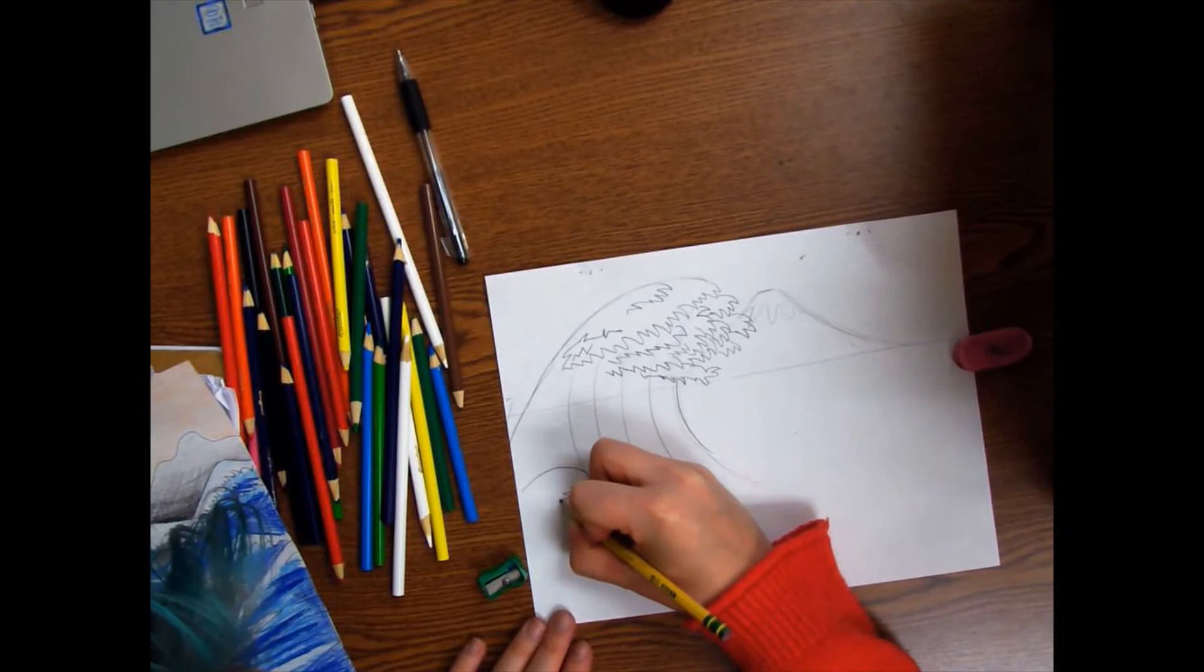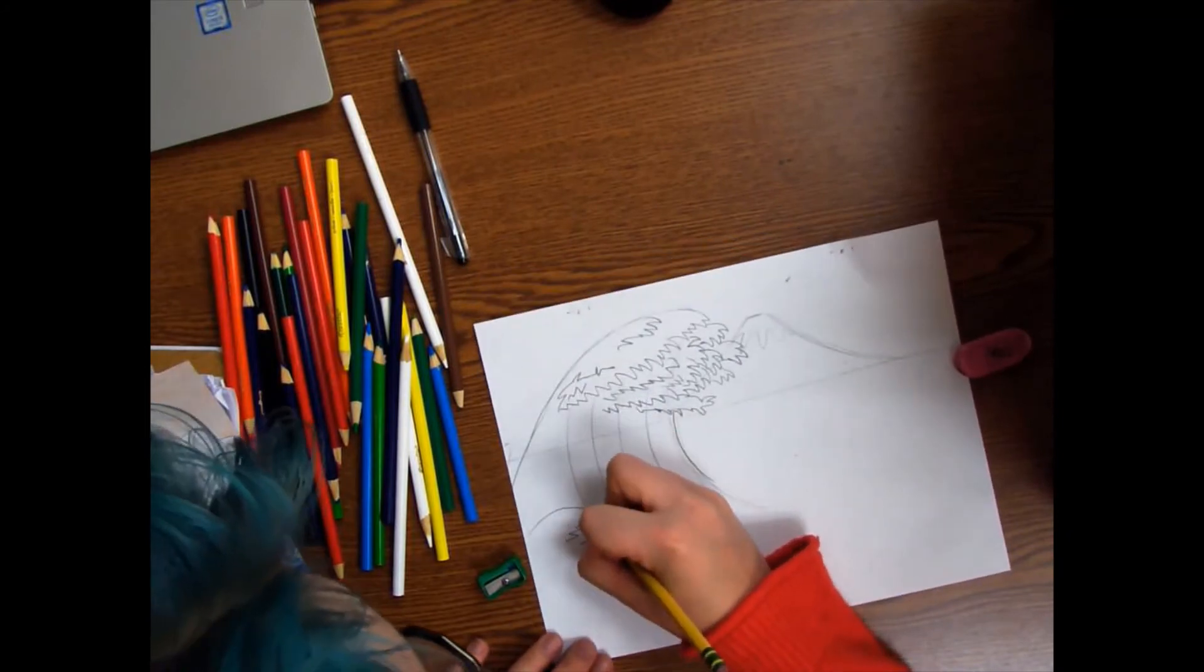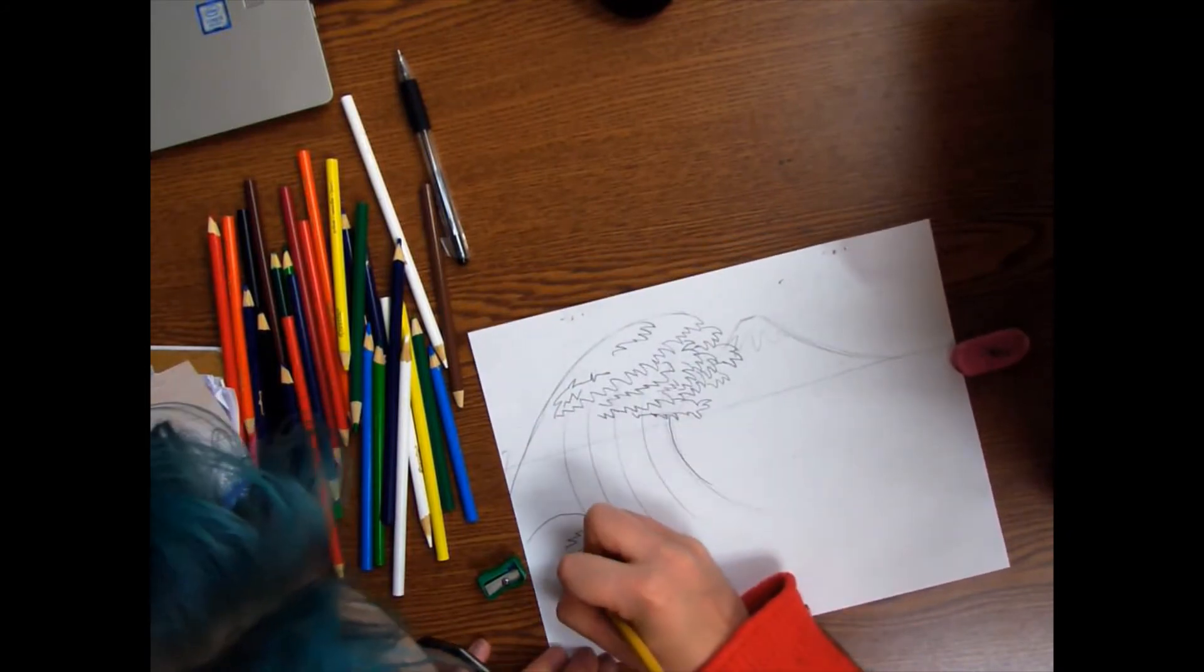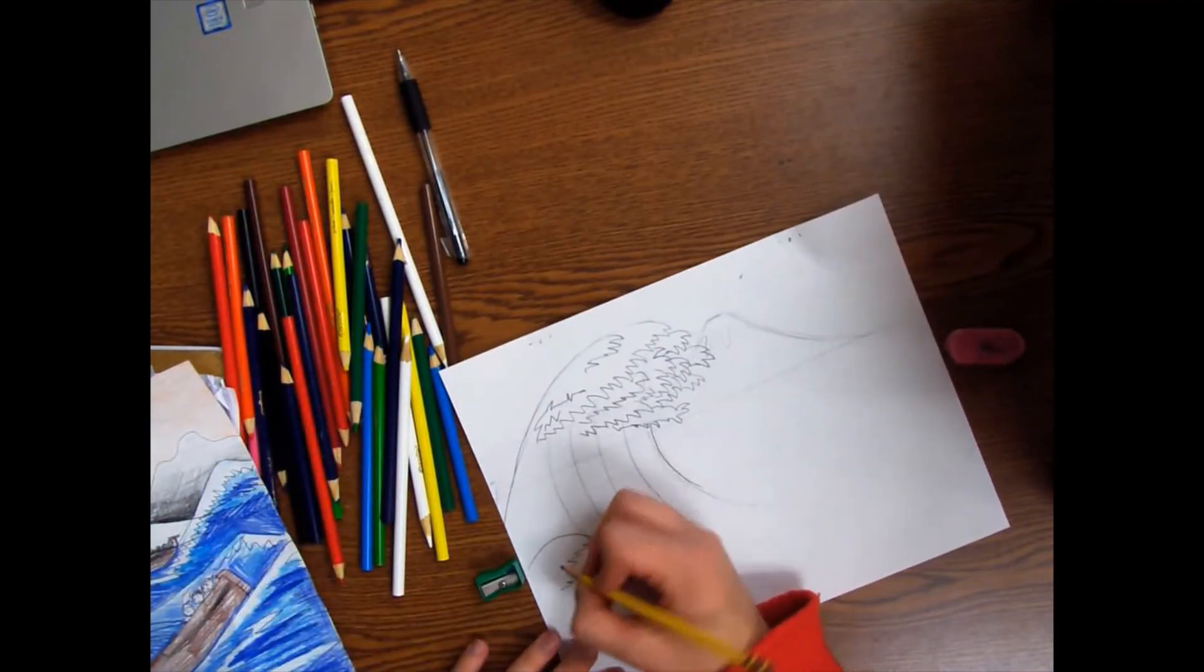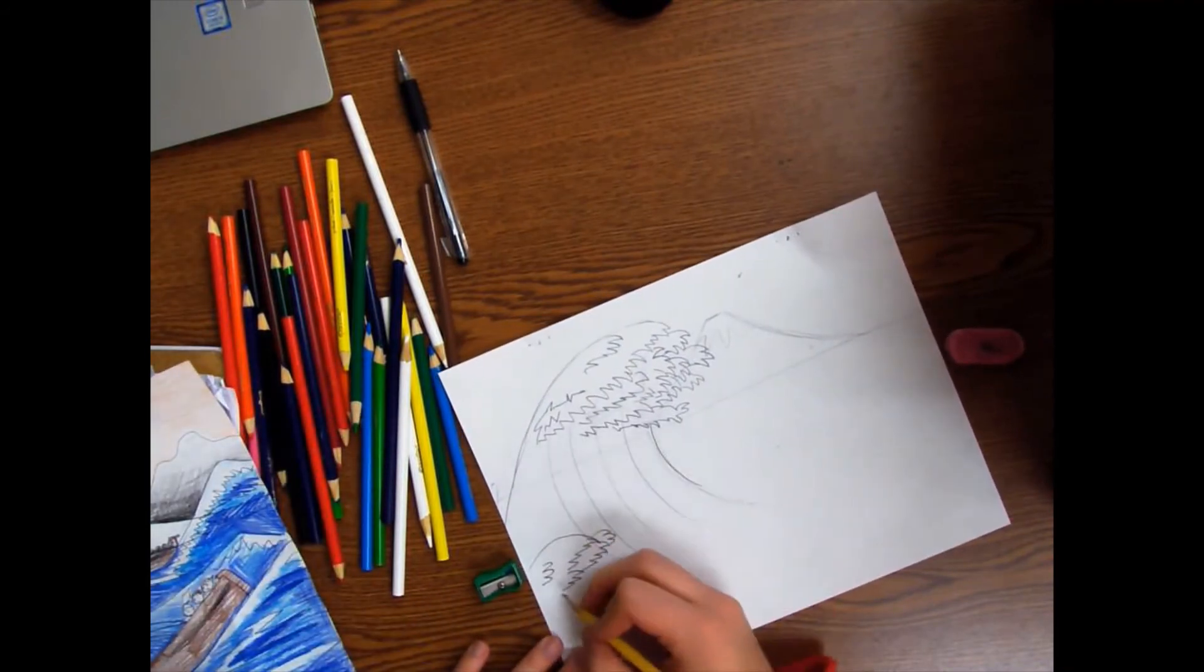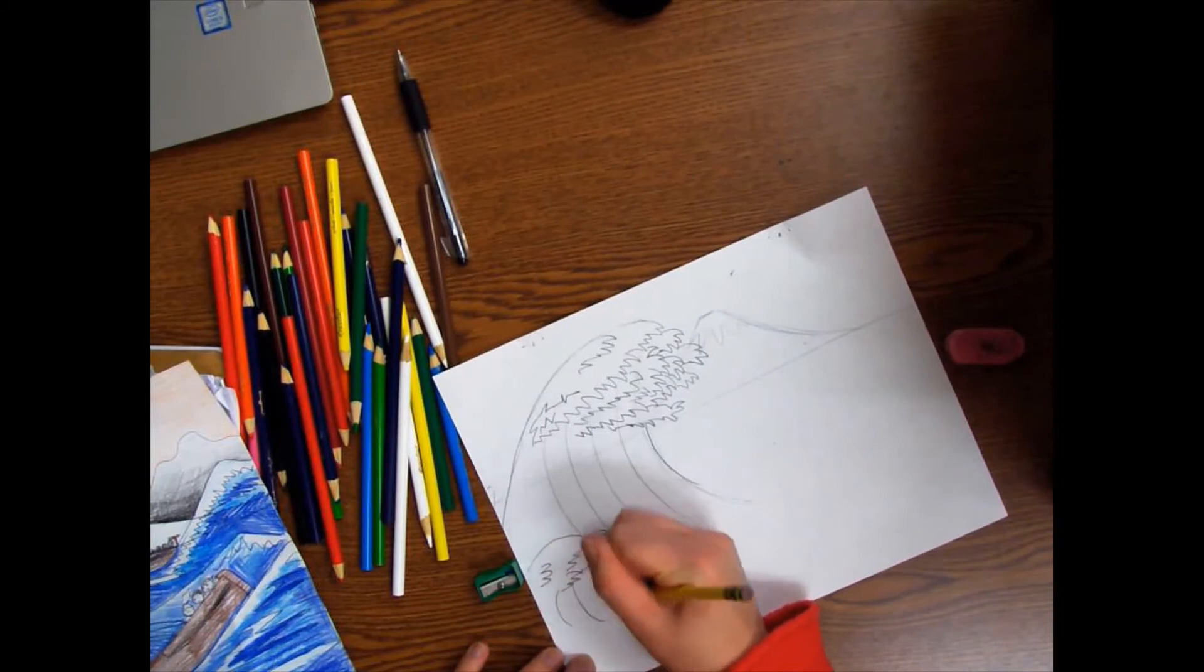All over the page. I'm starting on this side, getting some zigzags in here, and then of course add your C-shape below it.